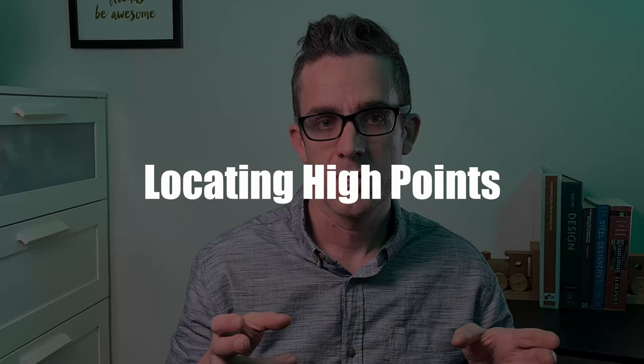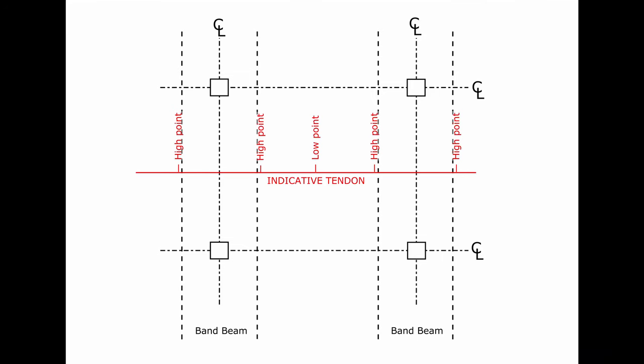And when we have band beams which is a beam inside the slab we generally have a high point on either side of that band and this offers two benefits. Firstly it increases the parabola of the drape thus pulling the load more efficiently to where we need it which is on side that band and also adds an even distributive load right across that band beam.